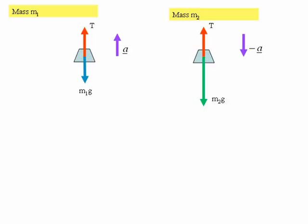Notice that in this problem we're going to take the upward direction as positive. So if the acceleration of m1 is a, then the acceleration of m2 must be minus a, as shown by the purple arrows on the diagram.